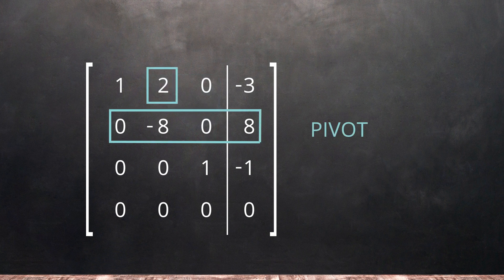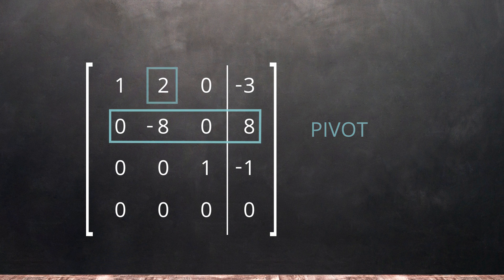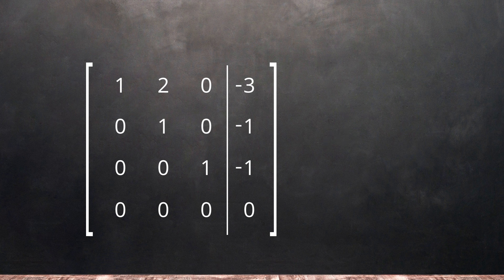We will use the second row as our pivot to create the remaining zeros in the upper right triangle. Before we use it to change row 1, we can multiply row 2 by negative 1 over 8 to make the calculation simpler.